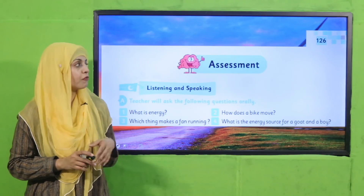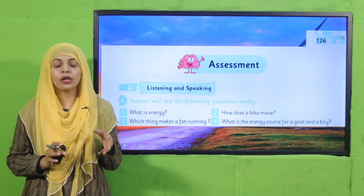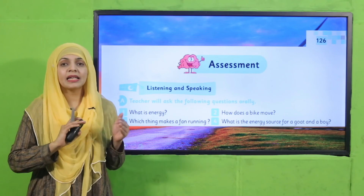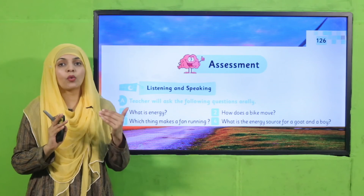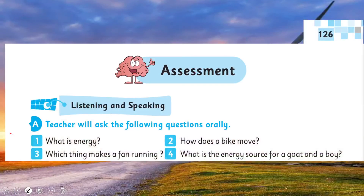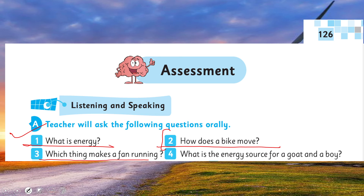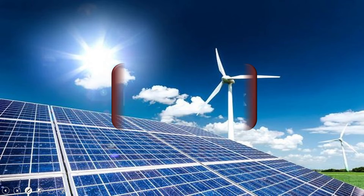Now it is time for evaluation. We will move forward towards page number 126. These are listening and speaking questions — listen carefully and then orally answer them. Question one: what is energy? The power for performing different functions and work is called energy. How does a bike move? With the help of fuel energy. Which thing makes a fan run? Electrical energy. What is the energy source of a goat and a boy? Food — very good.